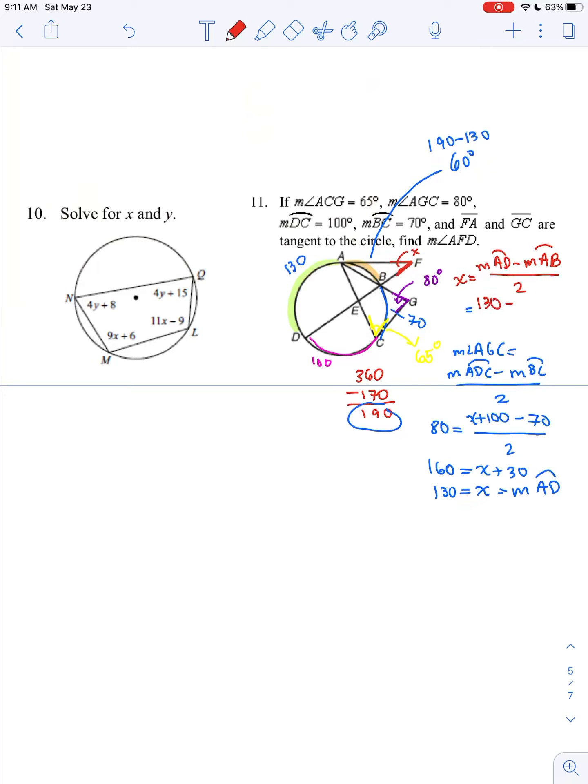I have my missing information, so for arc AD we're going to plug it in. We have 130 minus arc AB, which is 60, divide by 2, so X must therefore be equal to 35.